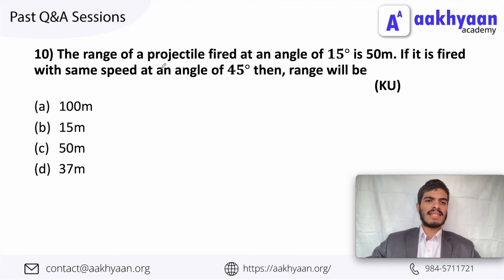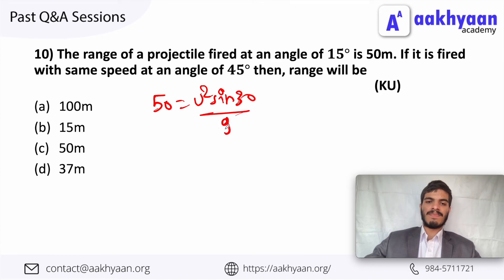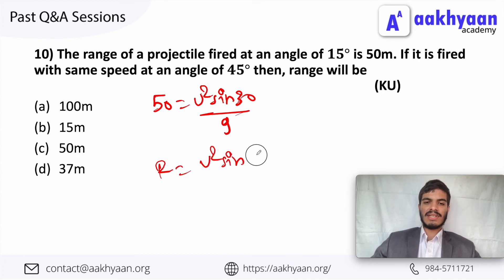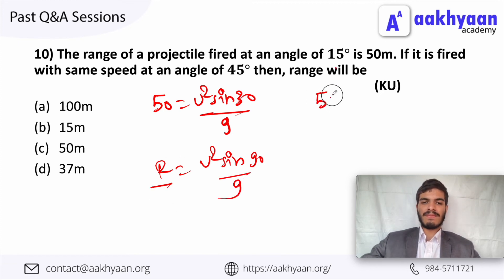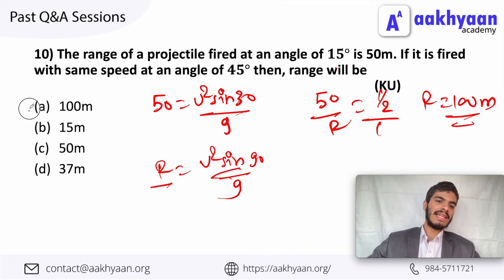In the 10th question, the range of a projectile fired at 15 degrees is 50 meters. So u squared sin 30 degrees divided by g equals 50. If fired with the same speed at 45 degrees, the range equals u squared sin 90 degrees divided by g equals u squared divided by g. From the first equation, u squared divided by g equals 100. So the range at 45 degrees is 100 meters. This is the correct option.